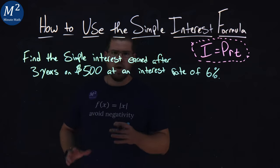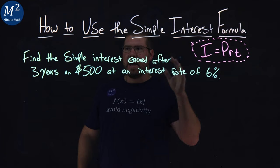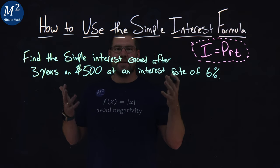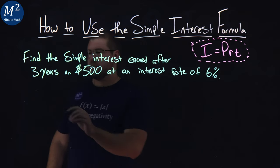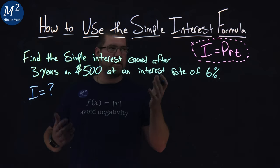Okay, we first want to find all aspects of our problem here. All right, I is the simple interest we've earned. Do we know what that is? Well, no, we don't. It's not given to us, we don't have it here.